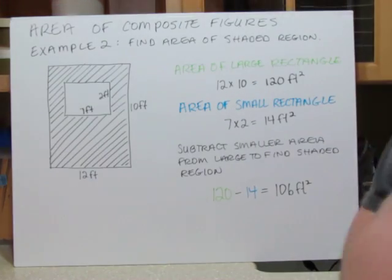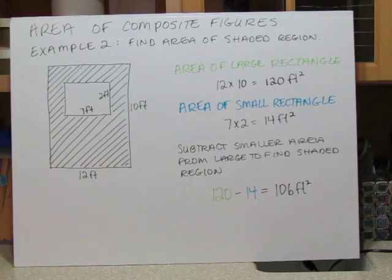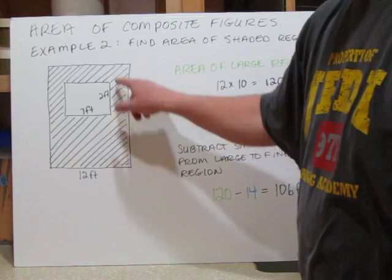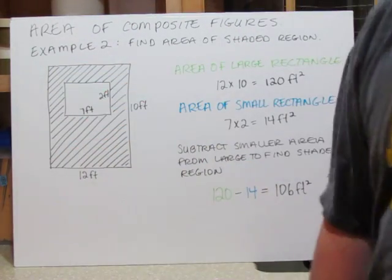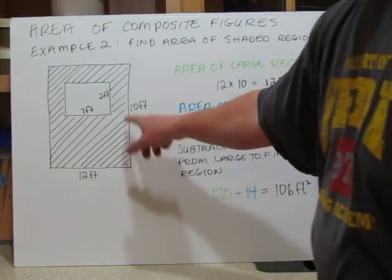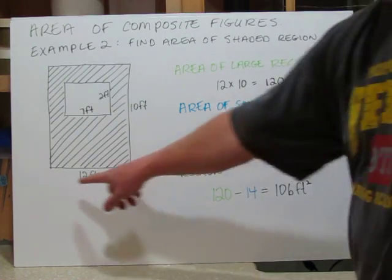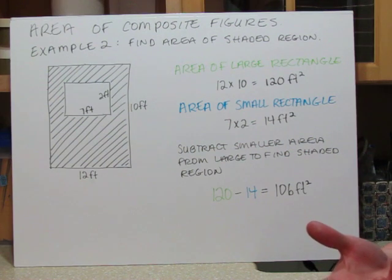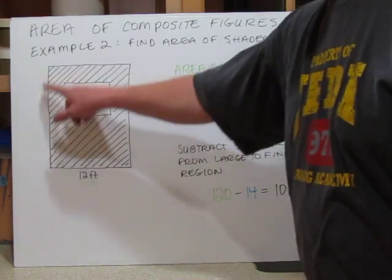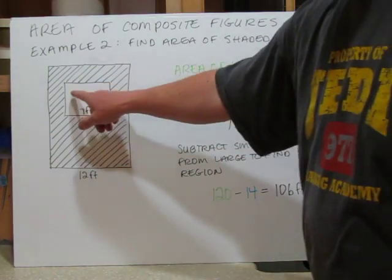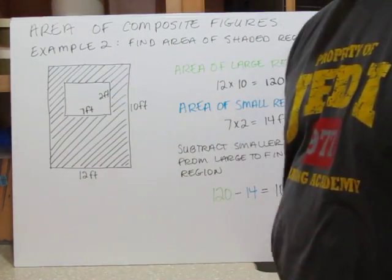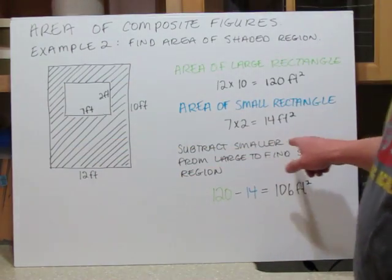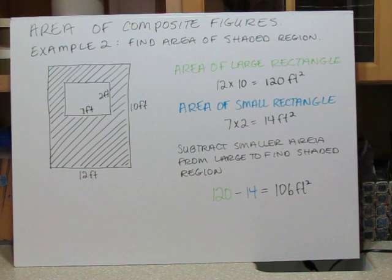Now a bit more complicated — we need to find the area of the shaded portion. We have a large rectangle with a smaller unshaded rectangle inside. The approach is to find the area of the big rectangle and subtract the smaller one. The large rectangle is 12 feet by 10 feet: 12 times 10 equals 120. The small rectangle is 7 feet by 2 feet: 7 times 2 equals 14. So 120 minus 14 equals 106 feet squared.